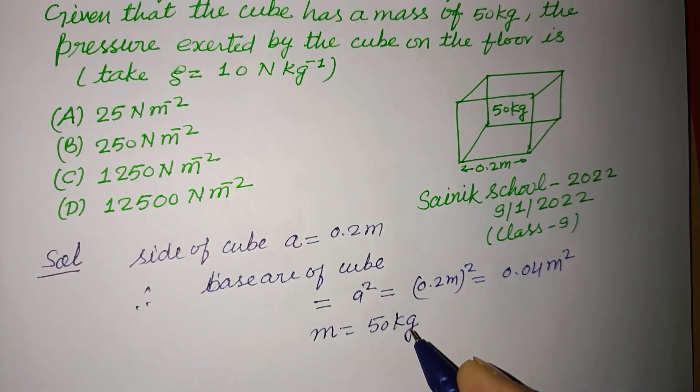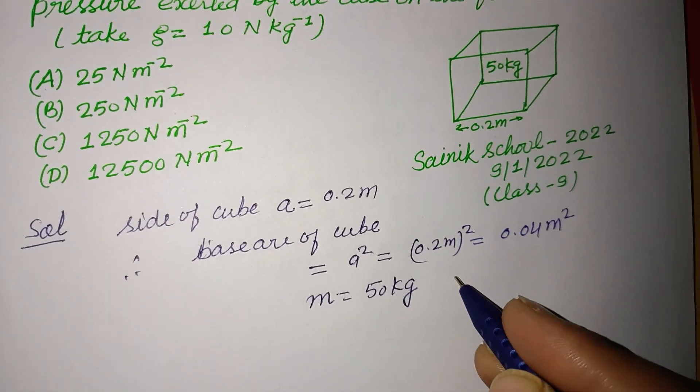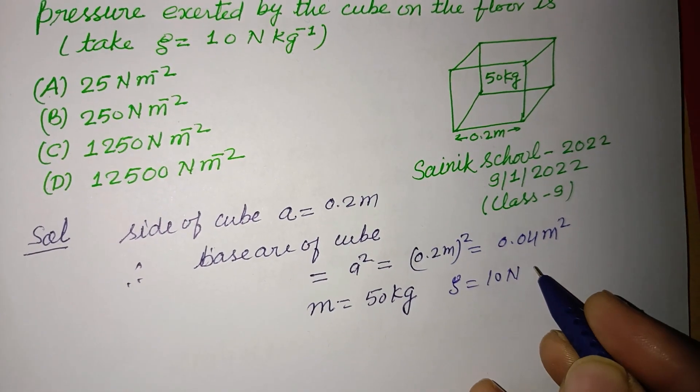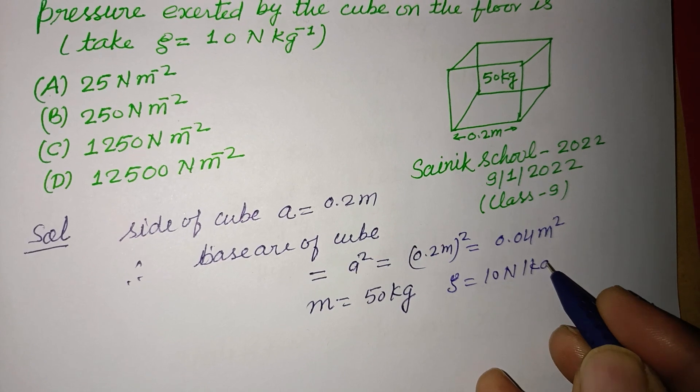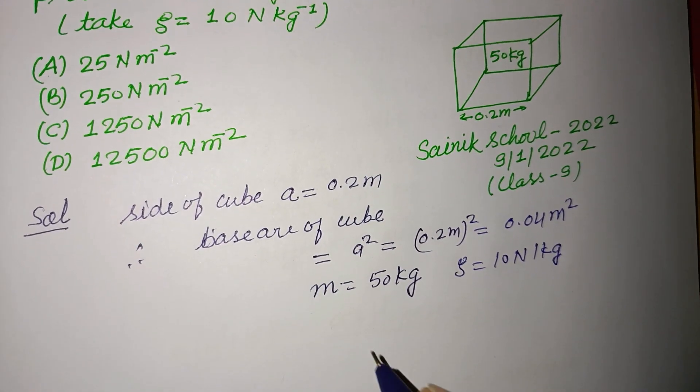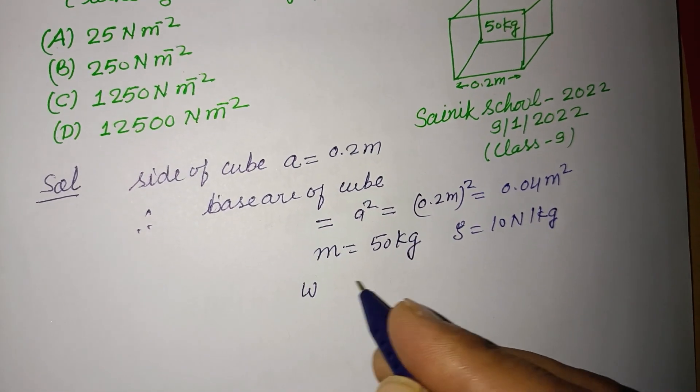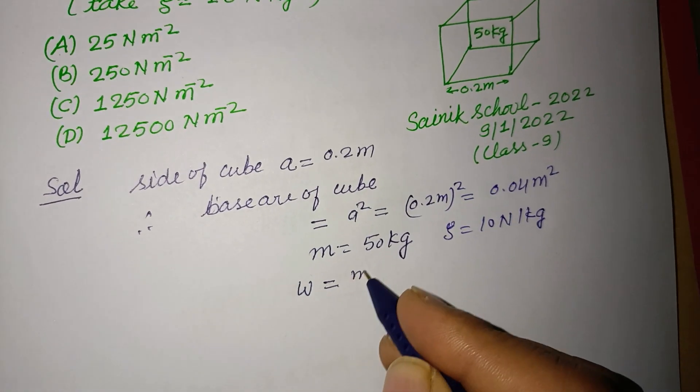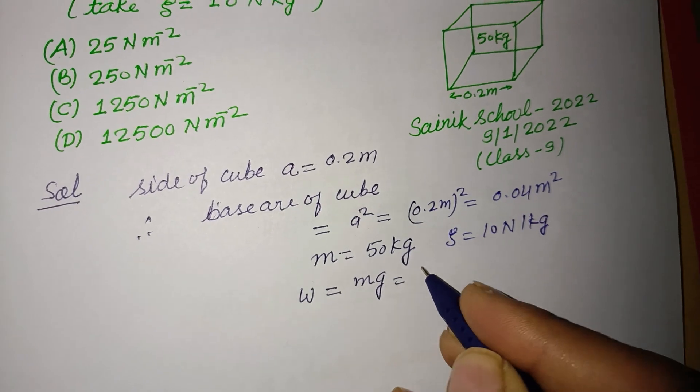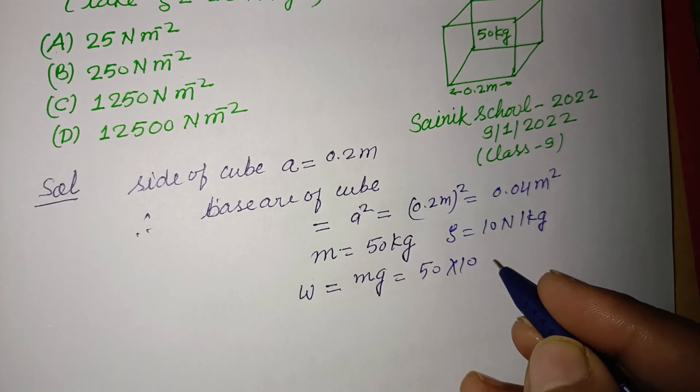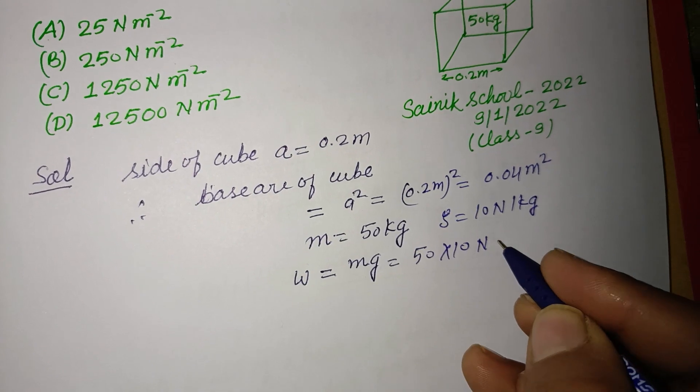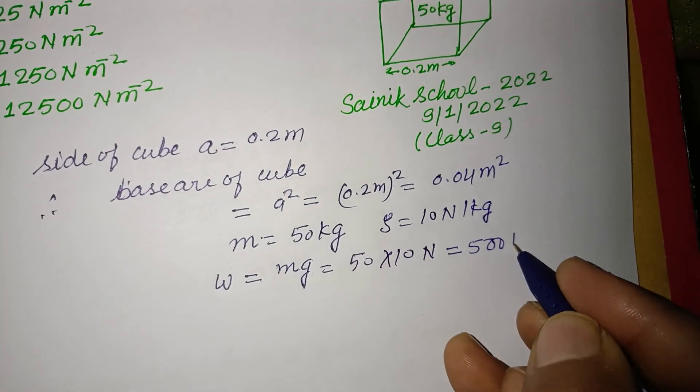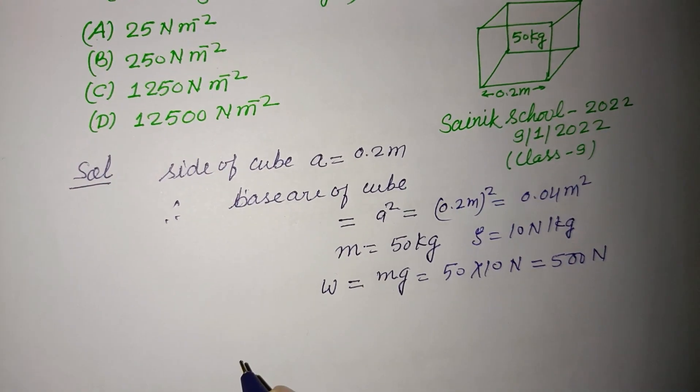And g is given to us as 10 newtons per kilogram. Therefore, weight of the cube is w equals mg, 50 times 10, this is 500 newtons.